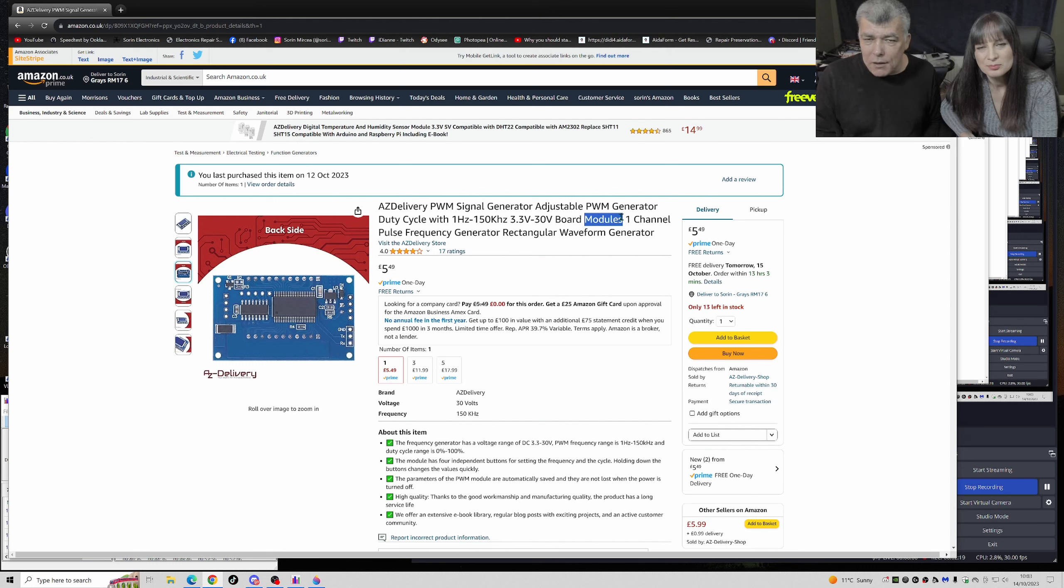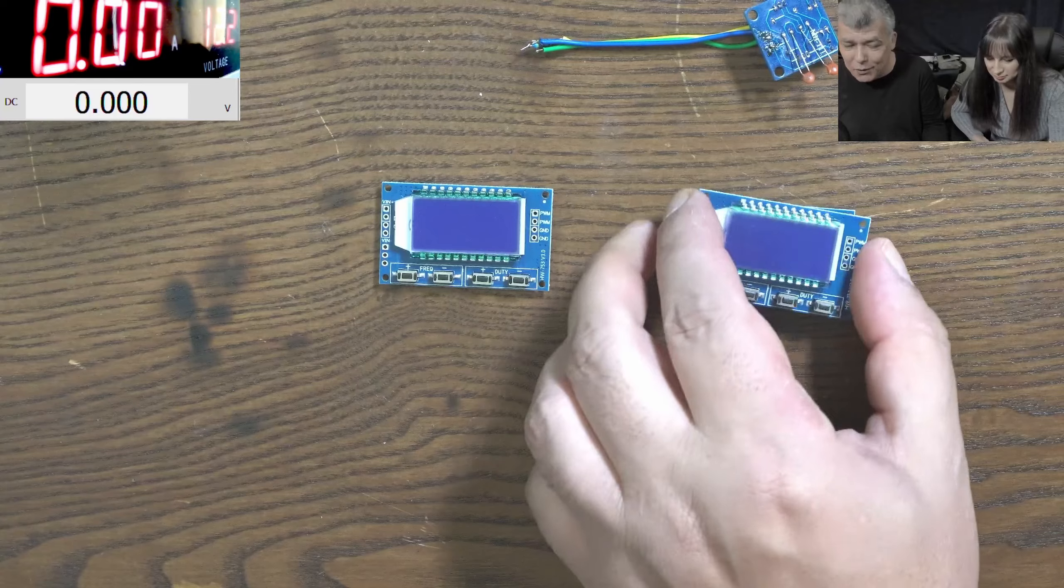You order a PWM signal generator module. In the beginning I thought they messed up my order because they sent me three PWM generators. But I don't believe it's a mistake because I tested them and everyone has a different wave shape. This is like a square normal one, this is triangular, and this is something else. Basically for five pounds you'll get three of these.